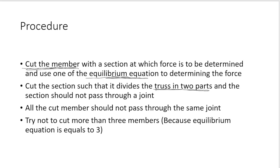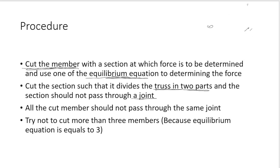The truss is divided into two parts — it is not necessary to divide it into equal parts. The section should not pass through a joint, meaning the cut members should not all pass through the same joint.